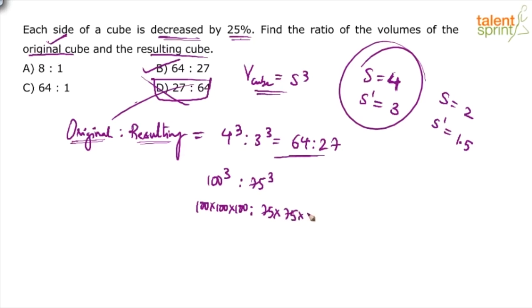Ultimately what happens? Take 25 common, so 25×4, 25×3. Take another 25 common: 4×3. Take another 25 common: 4×3. So 4×4×4 is 64, is to 3×3×3 is 27. We will come back to the same value that we had got earlier.